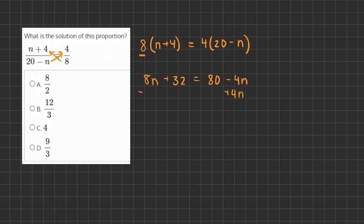These two cancel out and the 32s cancel out, and we are left with 8n plus 4n which gives us 12n equals 80 minus 32 which leaves us with 48.